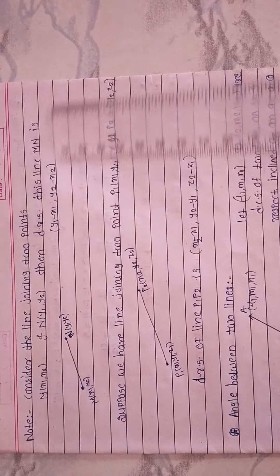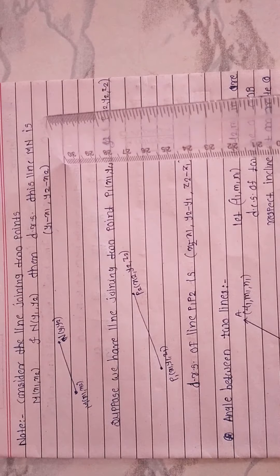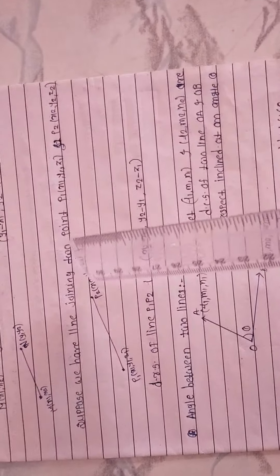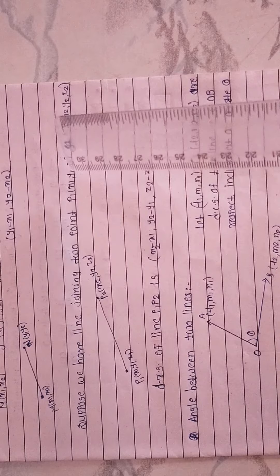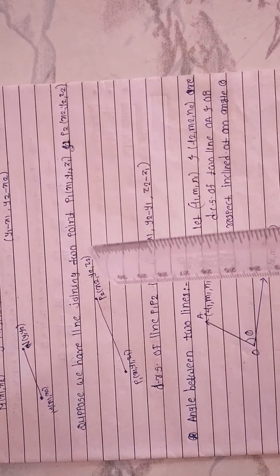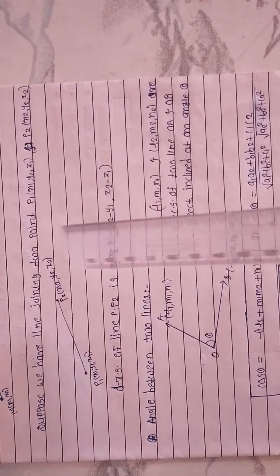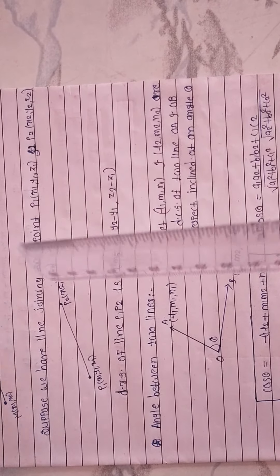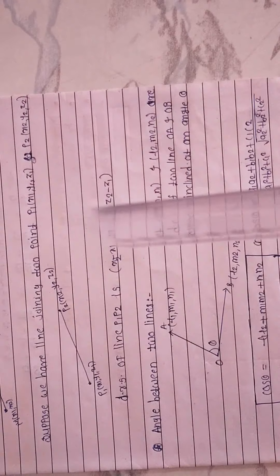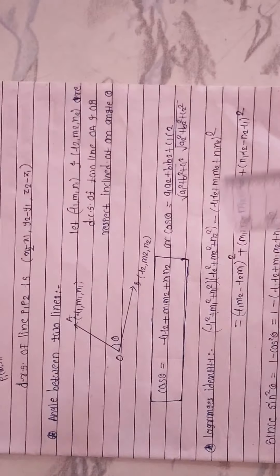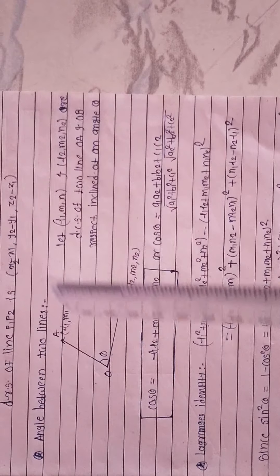Consider a line joining two points M(x₁, y₁) and N(x₂, y₂). The direction ratios of this line are simply obtained by coordinate-wise subtraction: (x₂ − x₁, y₂ − y₁). Similarly, for a line joining two points P₁(x₁, y₁, z₁) and P₂(x₂, y₂, z₂) in three dimensions, the direction ratios are (x₂ − x₁, y₂ − y₁, z₂ − z₁).